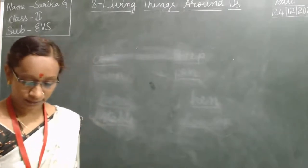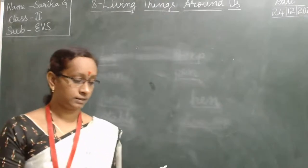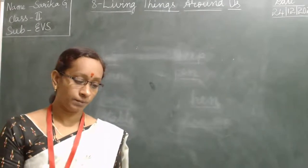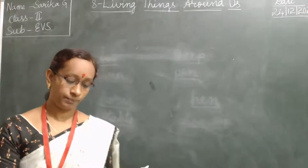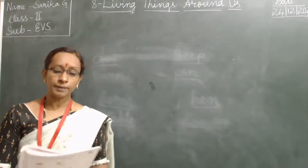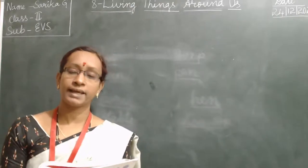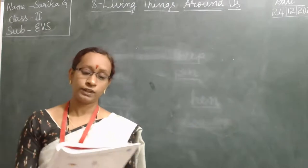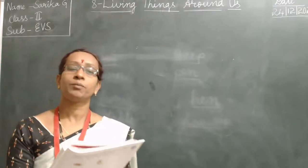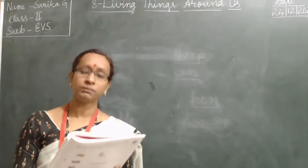Open companion book, page number 30. Sing and act. Old MacDonald had a farm, E-I-E-I-O. And on his farm he had a cow, E-I-E-I-O. With a moo here and a moo moo there, here a moo, there a moo, everywhere a moo moo. Old MacDonald had a farm, E-I-E-I-O.